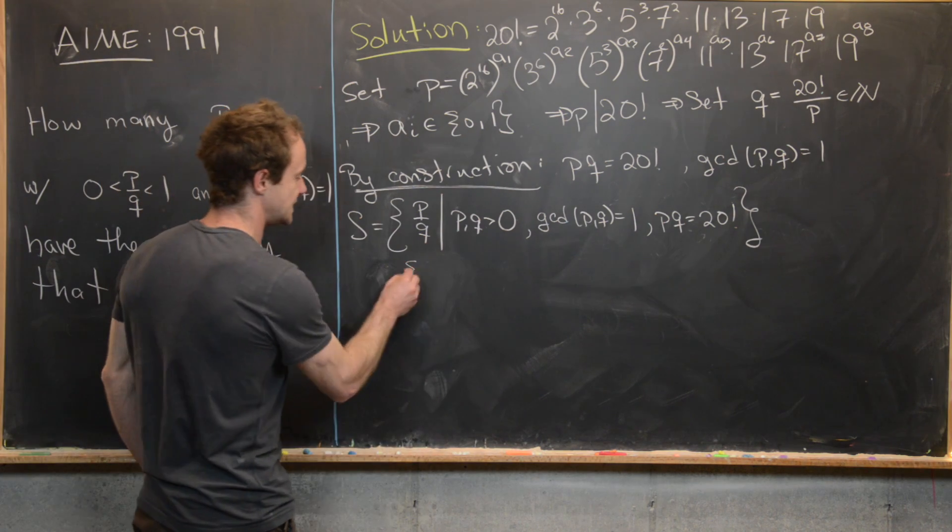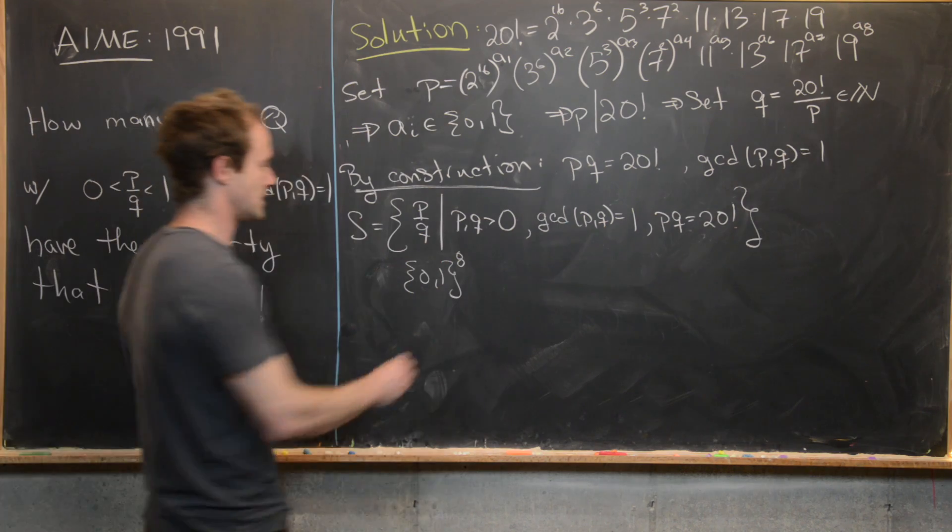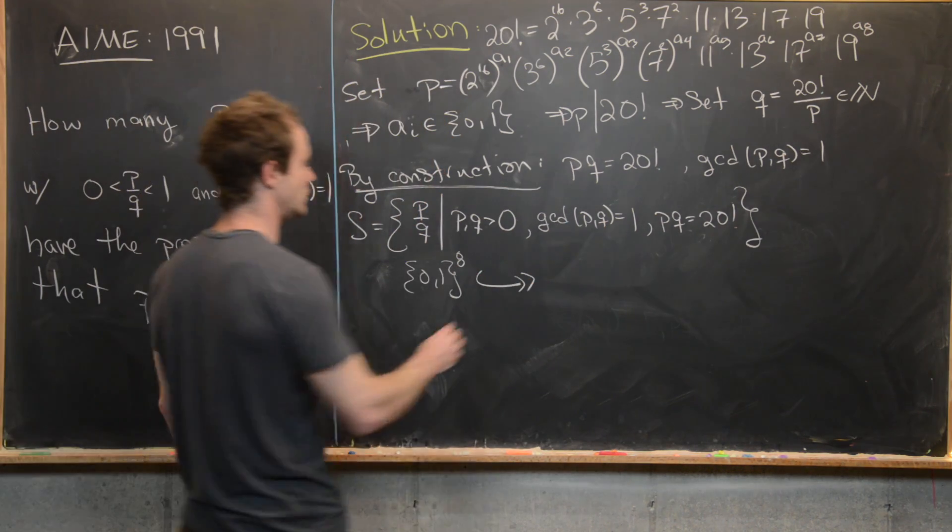In other words, the Cartesian product of eight copies of the set {0, 1}, and this is going to be mapping one-to-one and onto to our set S.